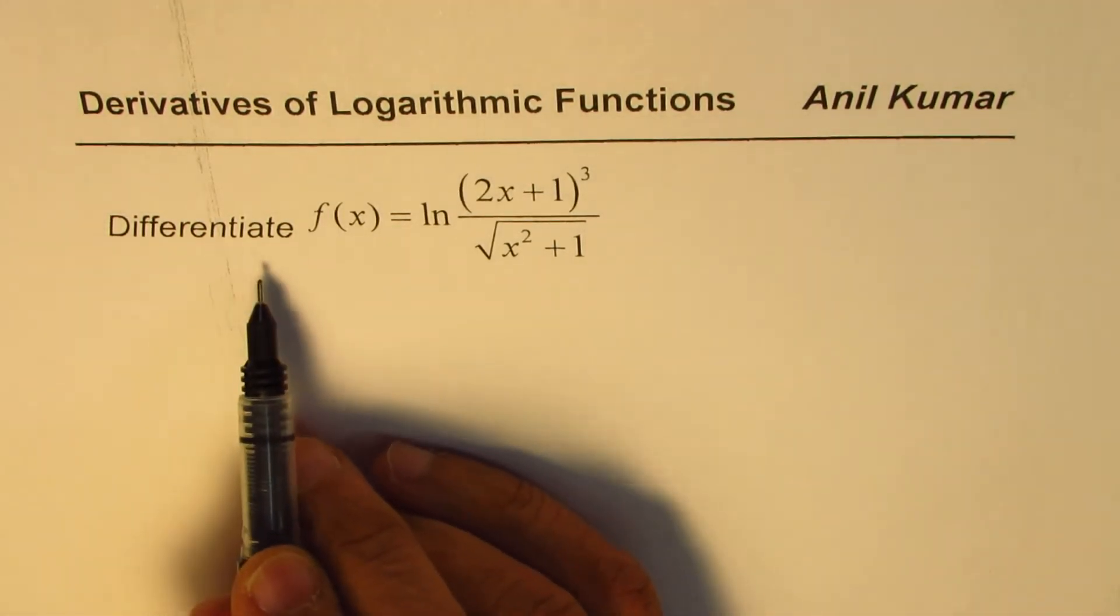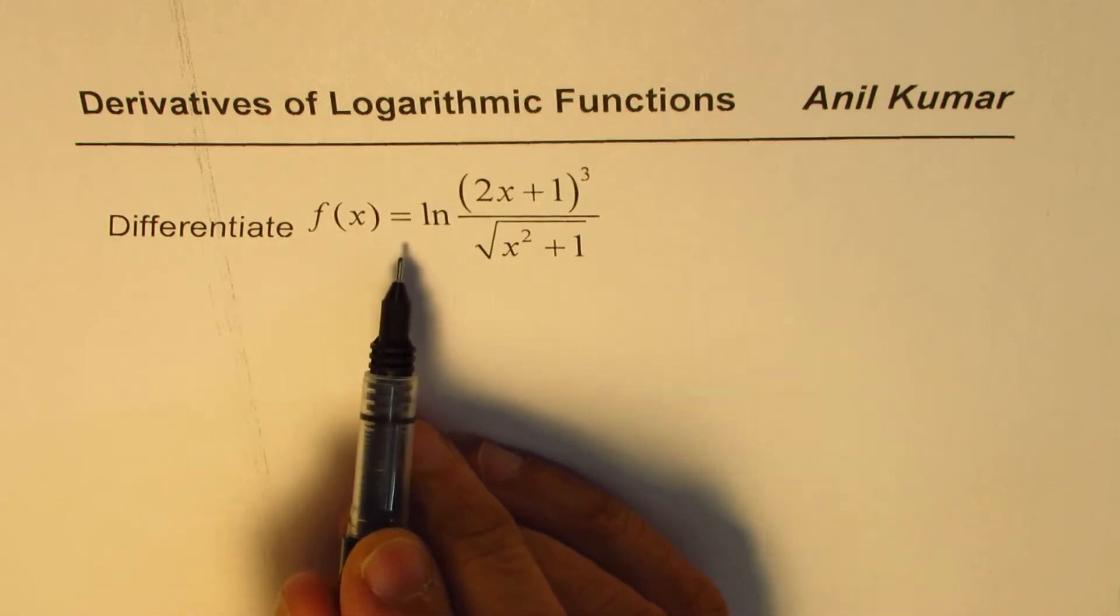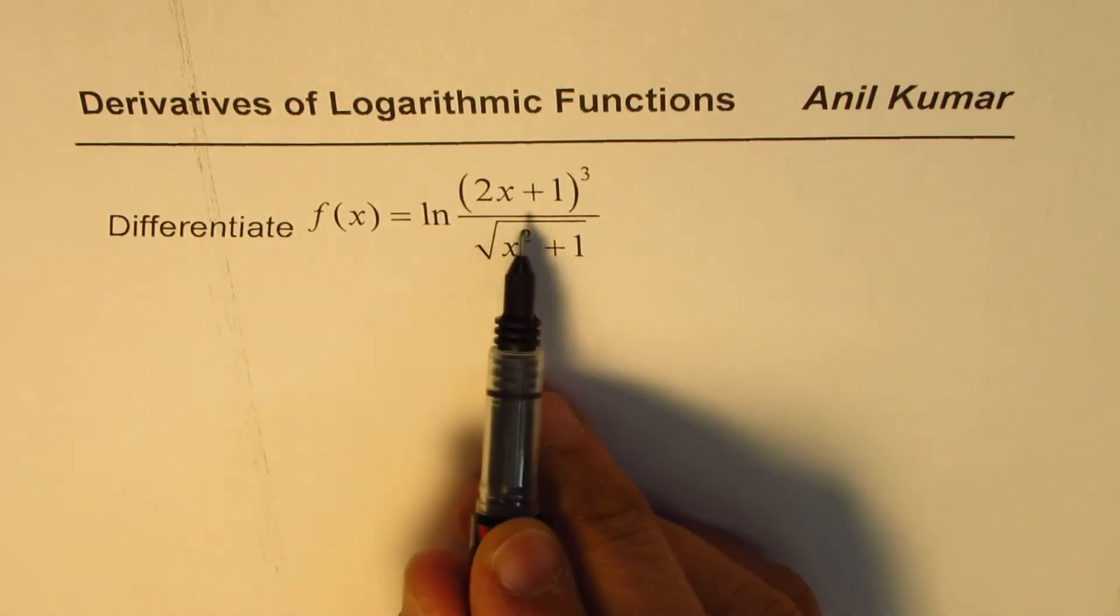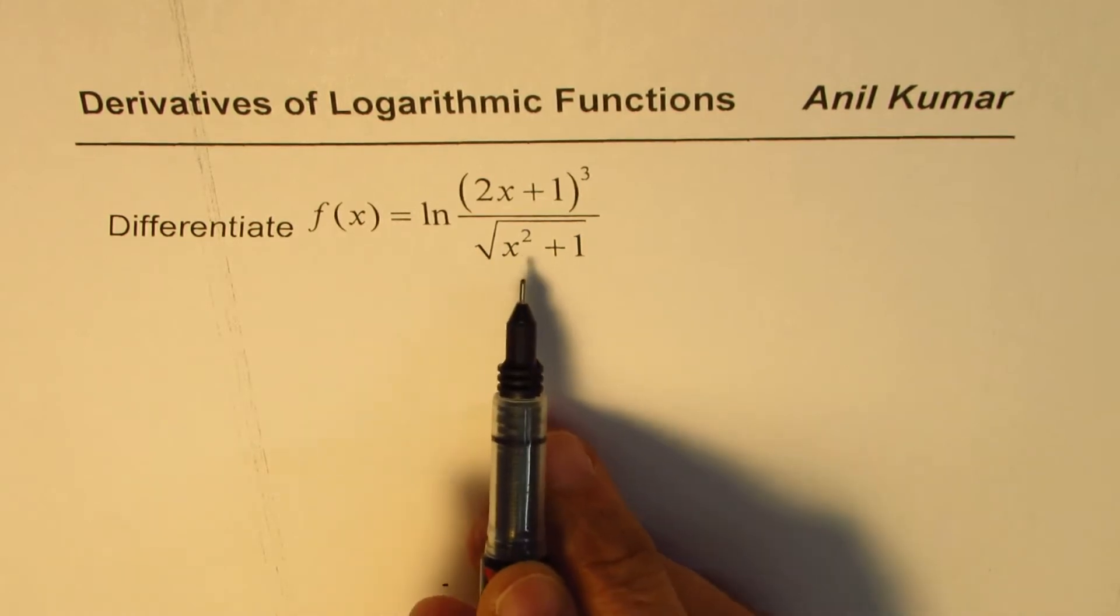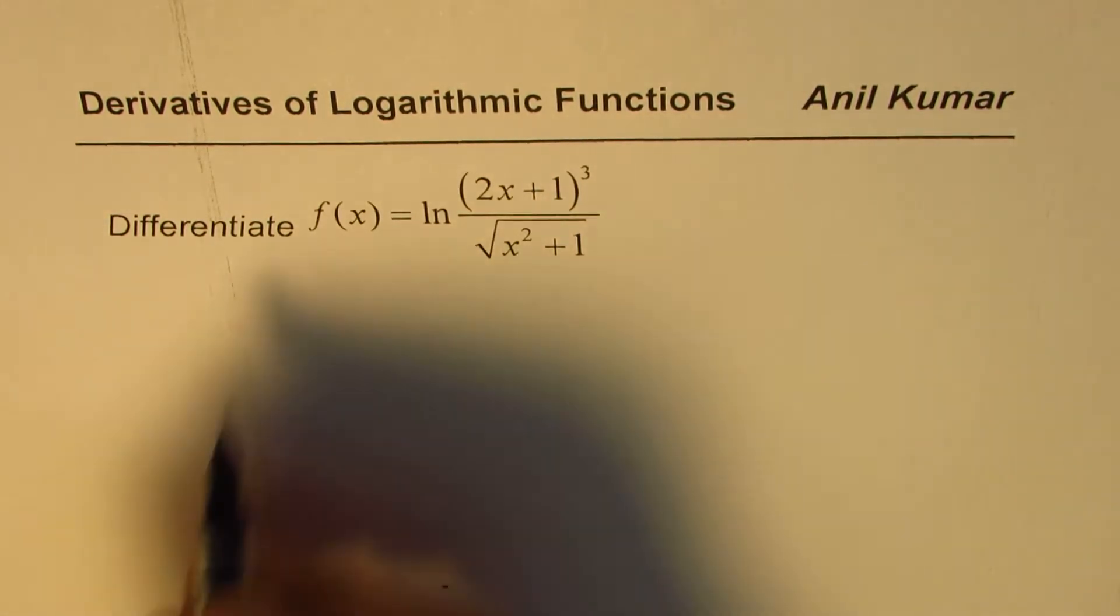The question is: differentiate f(x) = ln[(2x+1)³/√(x²+1)].